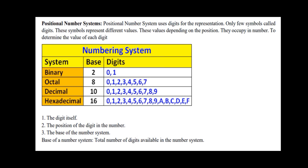So 18, 19, 20, 21. Decimal is normal — we have numbers 0 to 9, and the base is 10. Then we have hexadecimal. Hexadecimal goes 0 to 9, then 10 is A, 11 is B, 12 is C, 13 is D, 14 is E, 15 is F. So 0 to 15 gives base 16.